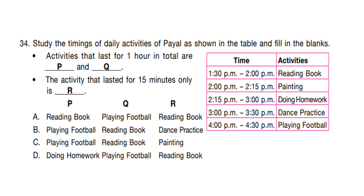Question number 34. Study the timings of daily activities as shown in the table and fill in the blanks. Activities that last for one hour in total are P and Q. The activity that lasted for 15 minutes only is R. Reading book goes from 1:30 PM to 2:00 PM, which is 30 minutes. From 2:00 to 2:15 is 15 minutes, so R lasted 15 minutes. R is painting, and painting is given in option C only.